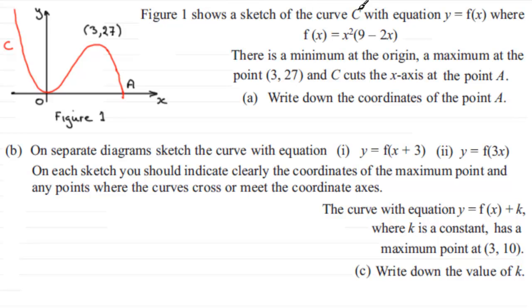We've got Figure 1 shows a sketch of the curve C with equation y equals f of x, where f of x is equal to x squared multiplied by 9 minus 2x. There's a minimum point at the origin as you can see here and a maximum point at the point (3, 27).